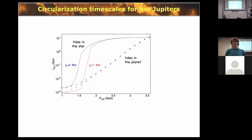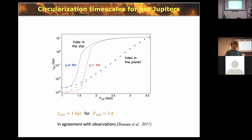I have also applied the formalism to hot Jupiters — giant planets close to their host star. We get circularization timescales in agreement with the observed period of about 3 days, driven mainly by the tide raised in the planet by the star rather than the other way around.